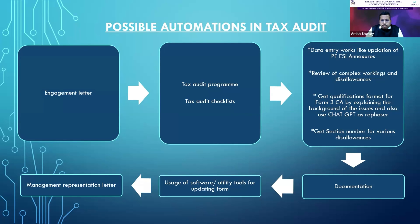Documentation is also part of tax audit. To do this documentation, along with our tax audit workings, we also need engagement data, tax audit programs, and all these things. As peer review is now mandatory for all CA firms, ChartGPT will help us with those documentation requirements.